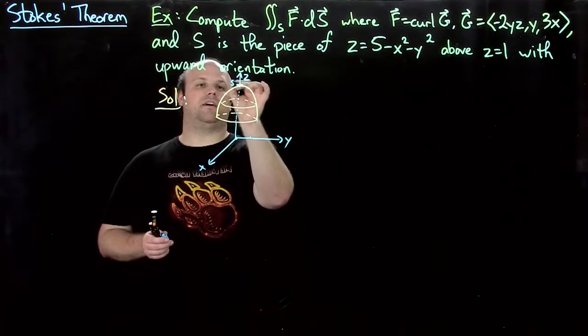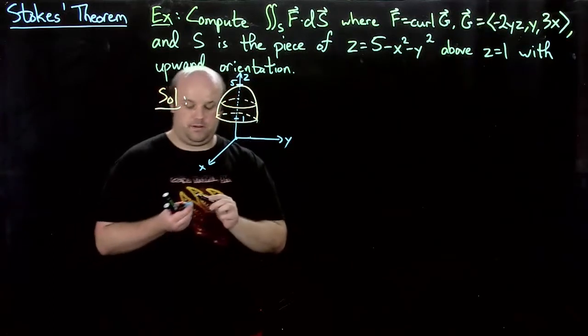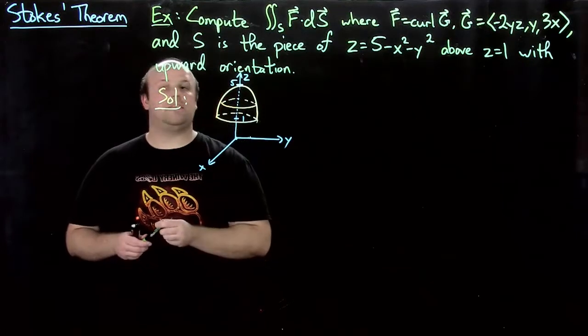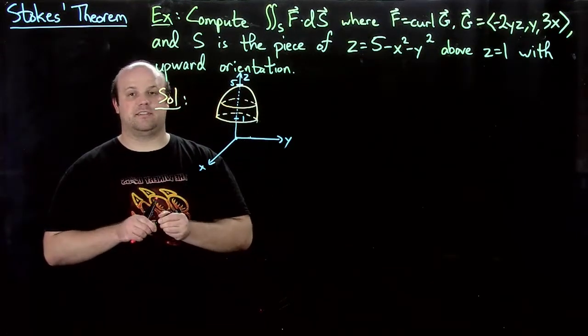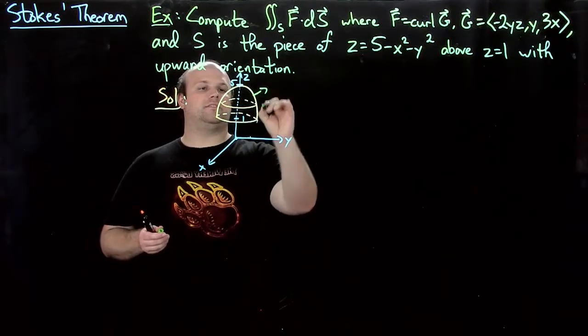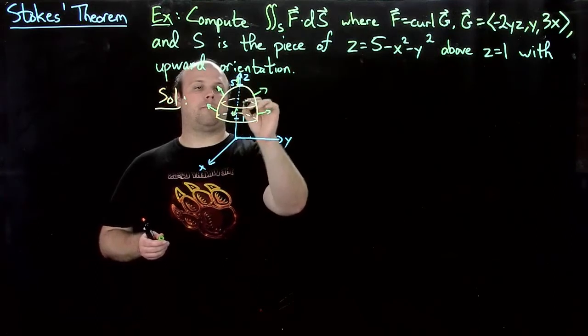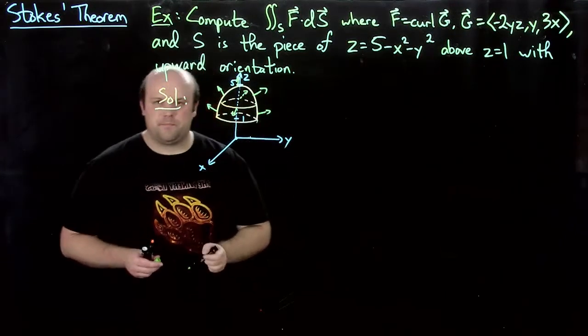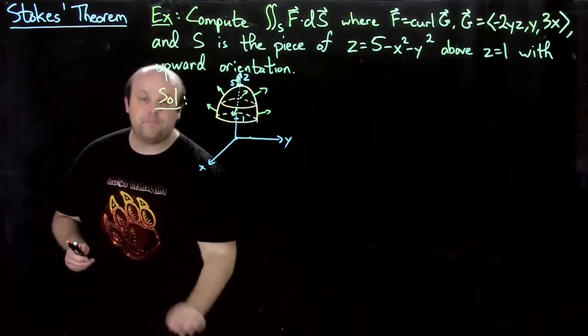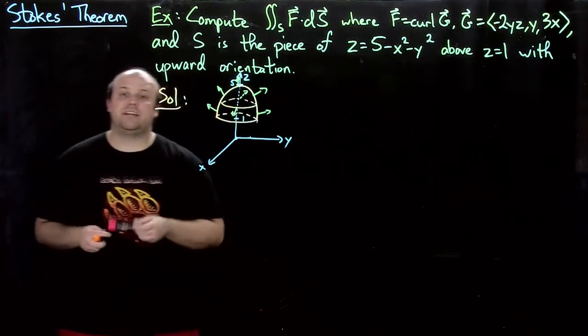So up here is z equals 5. Here is z equals 1, because it's cut off by the plane z equals 1. Then what does the orientation on this look like? Well, it's with the upward orientation, so it's an orientation that looks something like this. So it's kind of the spikes coming out of the helmet.